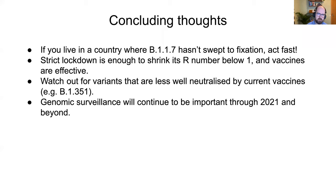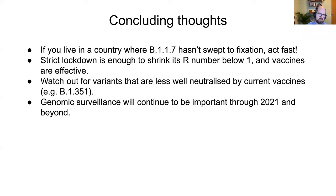A few concluding thoughts: if you live in a country where B.1.1.7 hasn't yet reached fixation, act fast — it transmits fast, and even though vaccines will likely work against it, if you haven't fully vaccinated it can spread and cause a dreadful wave. There's increasingly consistent evidence it's also more lethal. Strict lockdown can bring its R below one; vaccines do seem to be effective — really good news. If B.1.1.7 has already swept to fixation, watch out for variants less well neutralized by vaccines. B.1.351 is still about a quarter of a percent of new cases in the UK and seems to be sticking around at a low level — an absolutely critical warning sign.